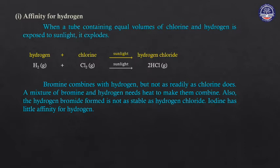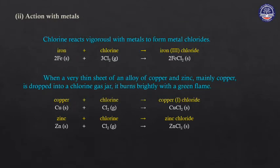Bromine does not react with hydrogen as readily as fluorine. Bromine reacts to form hydrogen bromide, which is not as strong as hydrogen chloride. In this equation, iron(III) chloride is known as iron(III) chloride.